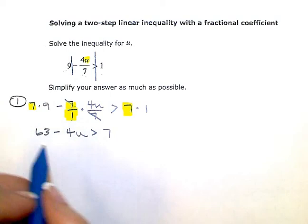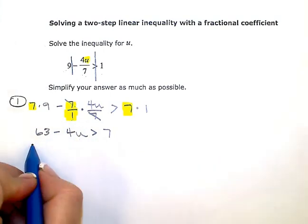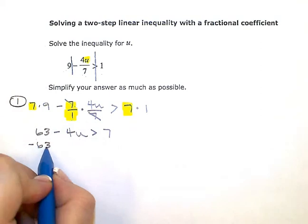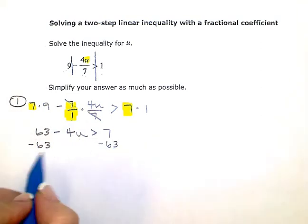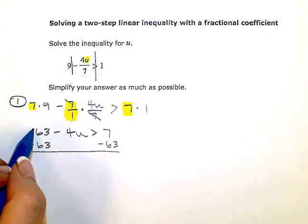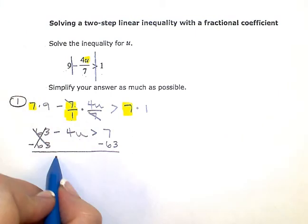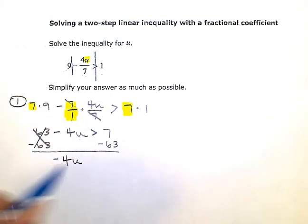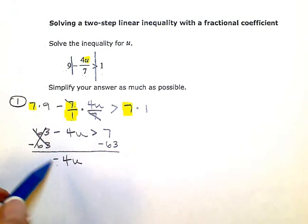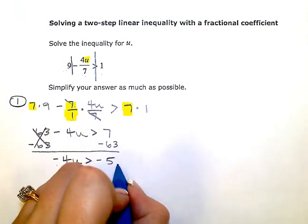To get the u by itself, I need to get rid of this constant term. So I'm going to subtract sixty-three from both sides of my inequality. I'm subtracting — not multiplying or dividing by a negative — so I don't need to flip my sign here. When I simplify, I'll have negative four u is greater than seven minus sixty-three, which is negative fifty-six.